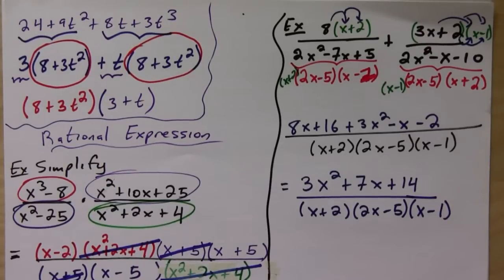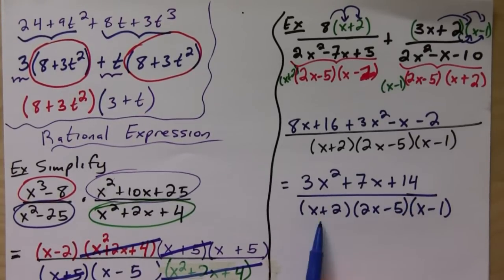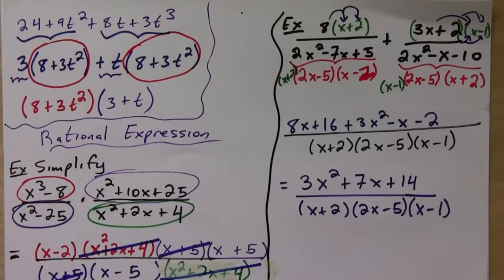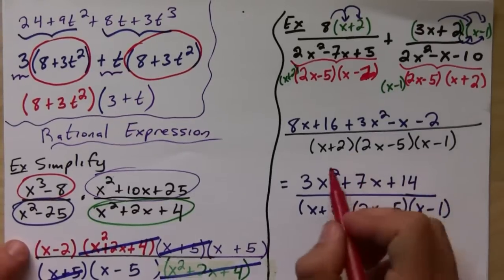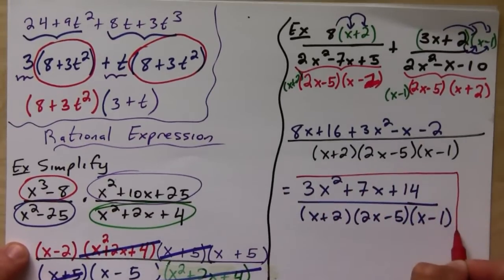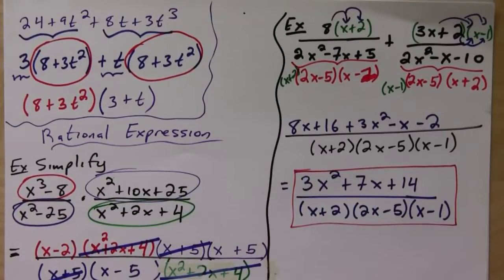Okay, and then you check to see if this guy's factorable so that you can cancel out with this, but you guys can try it, but it turns out that this is the final answer and that's it.